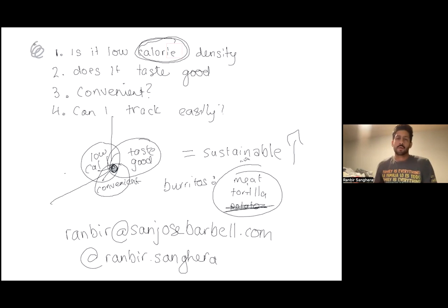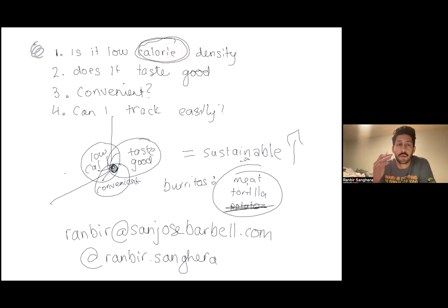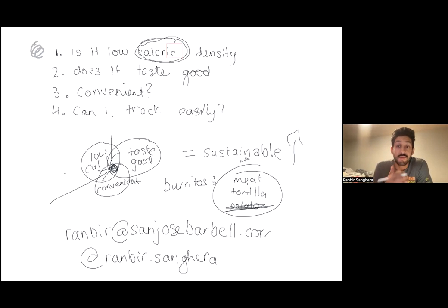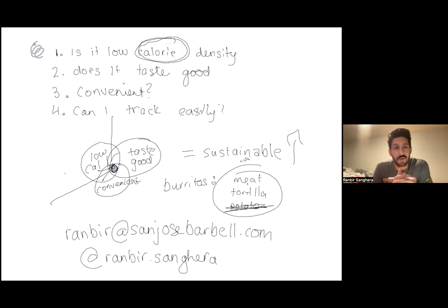We're going to go over the four lenses and go into each one a little bit. First and foremost, we'll talk about low calorie density. The four lenses are the criteria I use to pick foods so that we make fat loss effortless and enjoyable — that's really the goal here, because if it's not effortless and enjoyable, then what's the point?